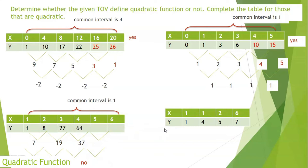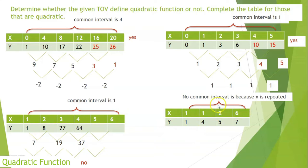Last example. In this case, looking at the values for x and the values for y, there is no common interval in x because x is repeated. Therefore, these ordered pairs do not define a quadratic function.